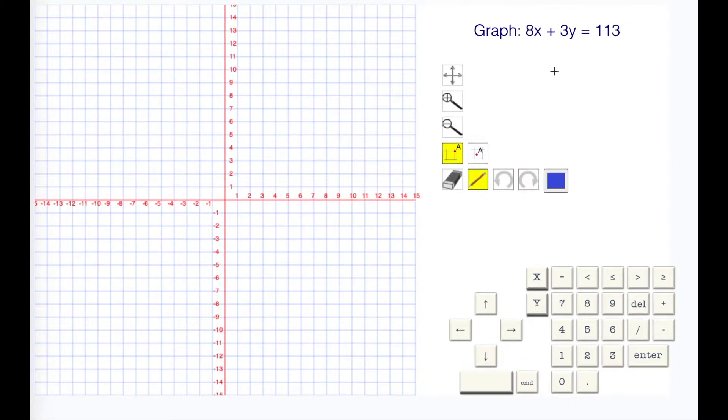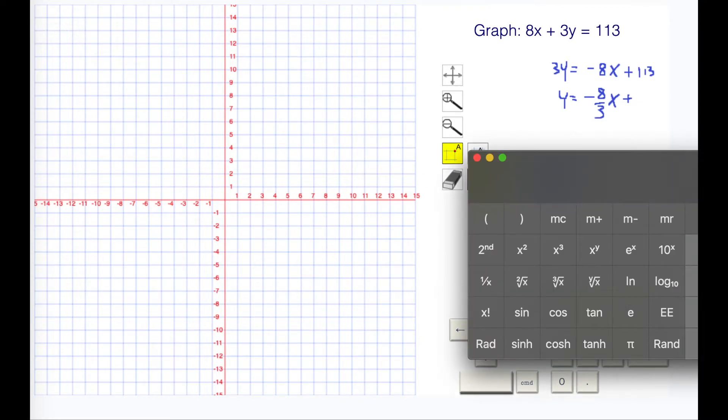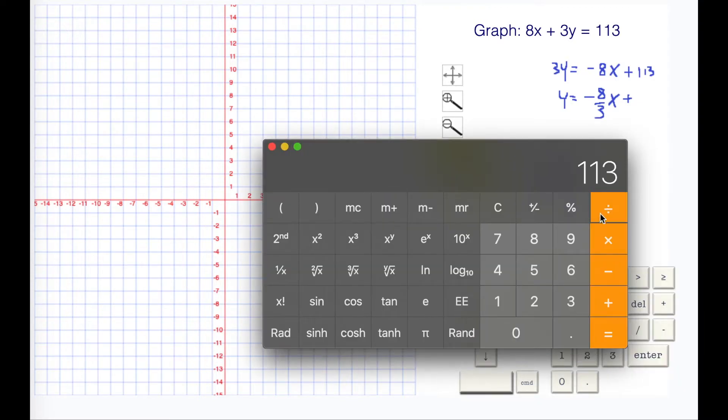I'm going to subtract 8x from both sides and we end up with 3y is equal to minus 8x plus 113. Then I'm going to divide everything by 3. So we get y is equal to negative 8 thirds x plus 113 divided by 3, which is 37.6 repeating.